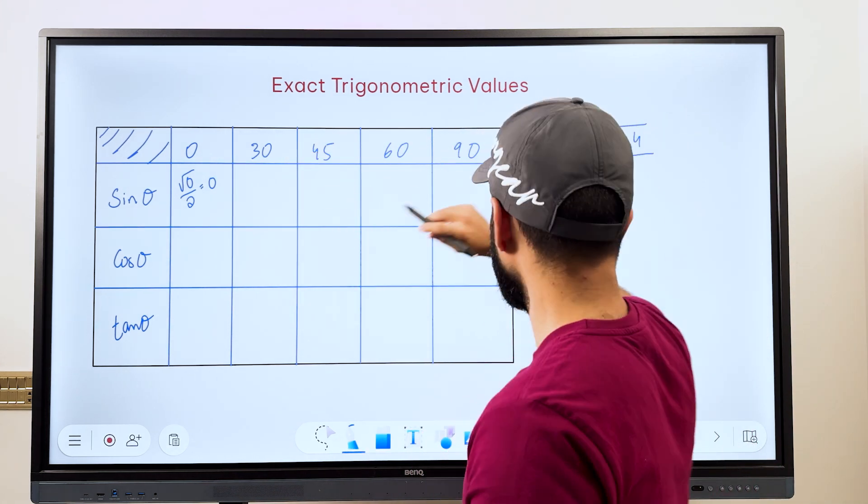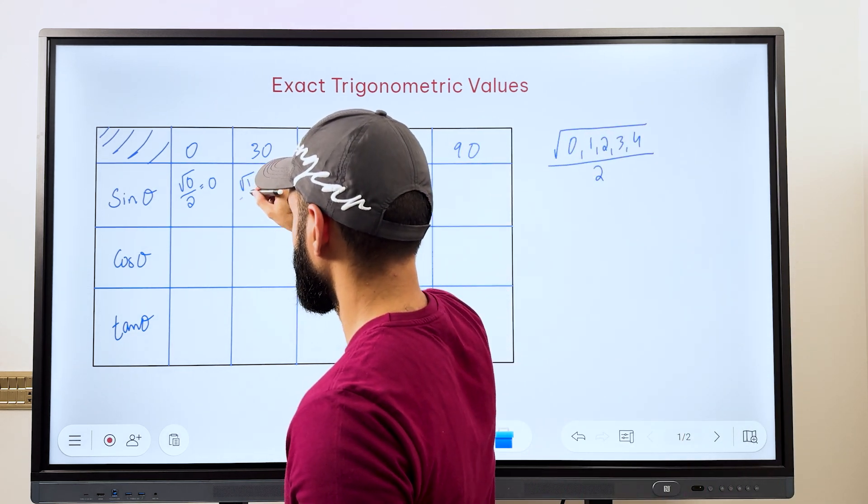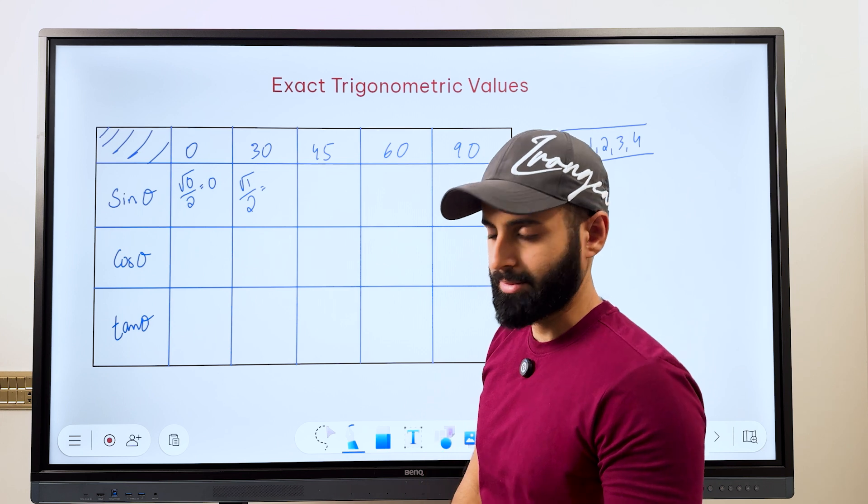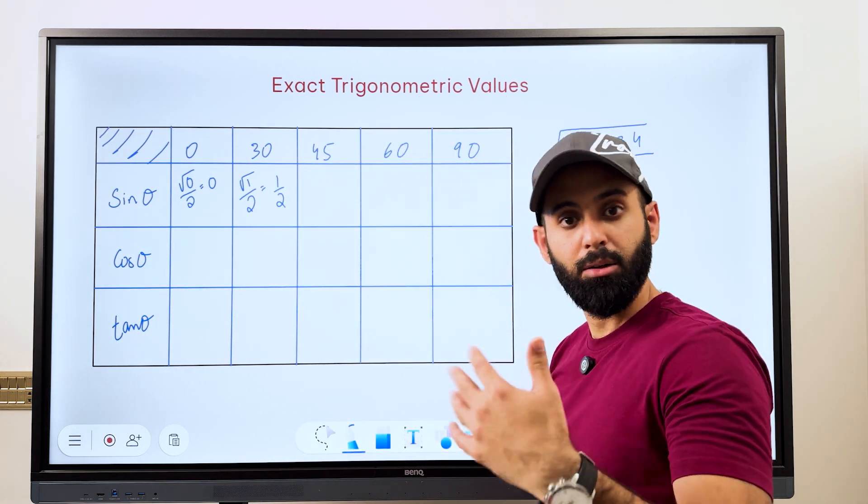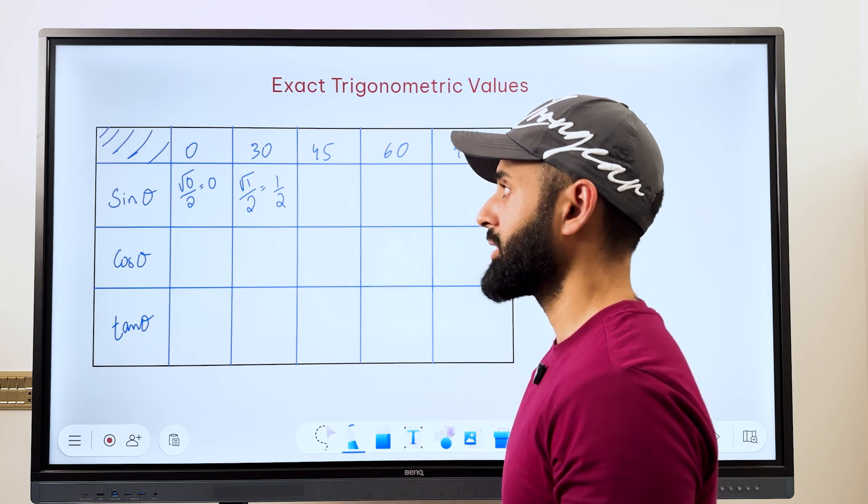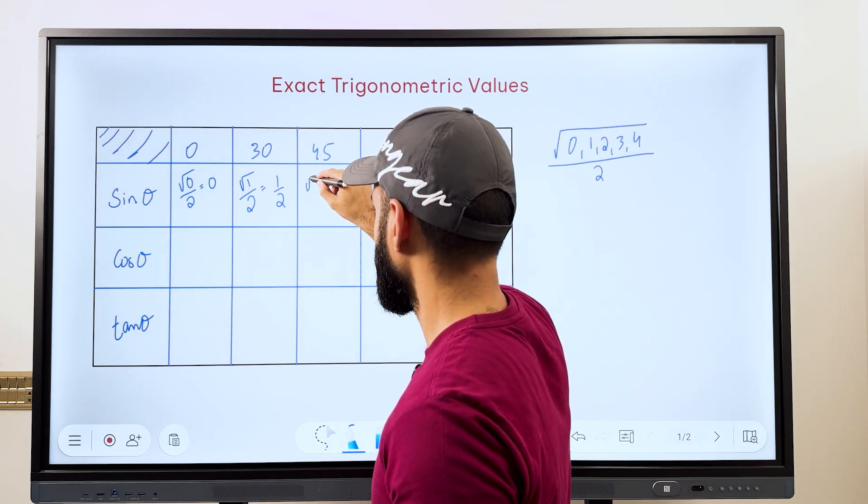Then 30 is the second value. So we pick the second value from the square root, we take the square root of it. So that's square root 1 divided by 2 and what's square root 1? That's 1. 1 divided by 2 is what sin 30 is. And keep your calculator with you, keep checking the values and let me know if I'm wrong.